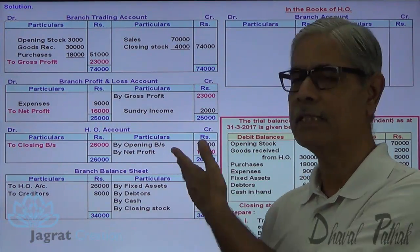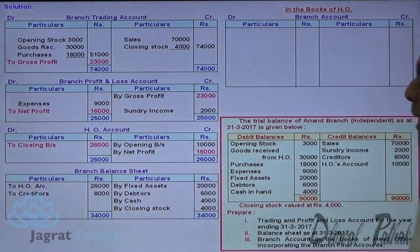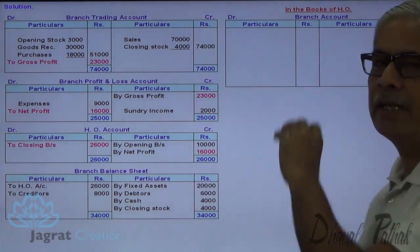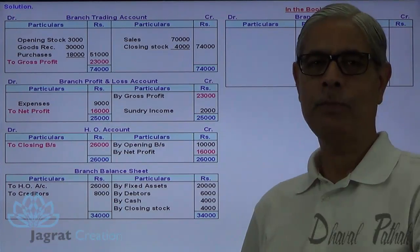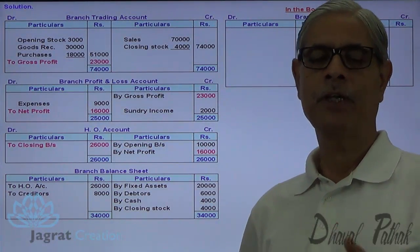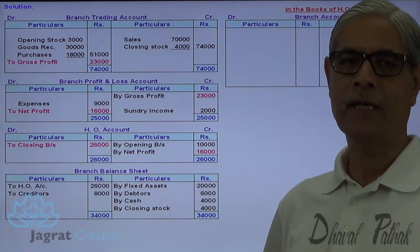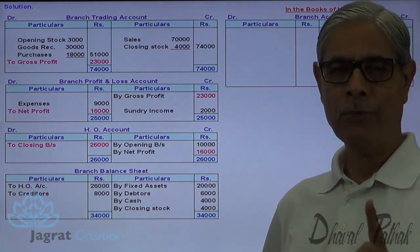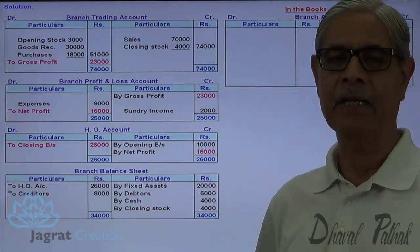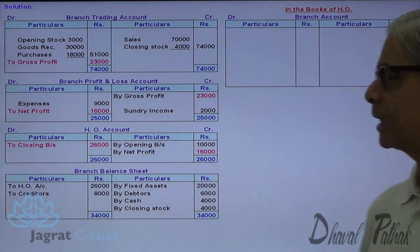This is how trading profit and loss account and balance sheet are prepared from the given trial balance and adjustment — it is a very simple thing. Now, absorption entry: this trading account is to be absorbed and merged in the books of accounts of HO. For that, we are required to write the adjustment entry or incorporation entry.